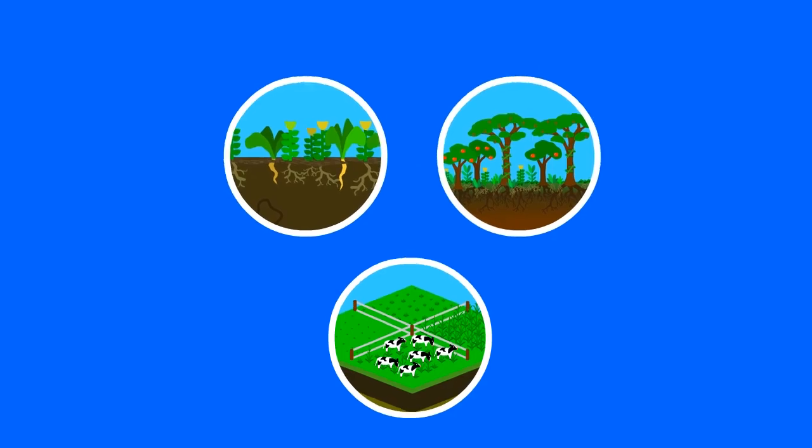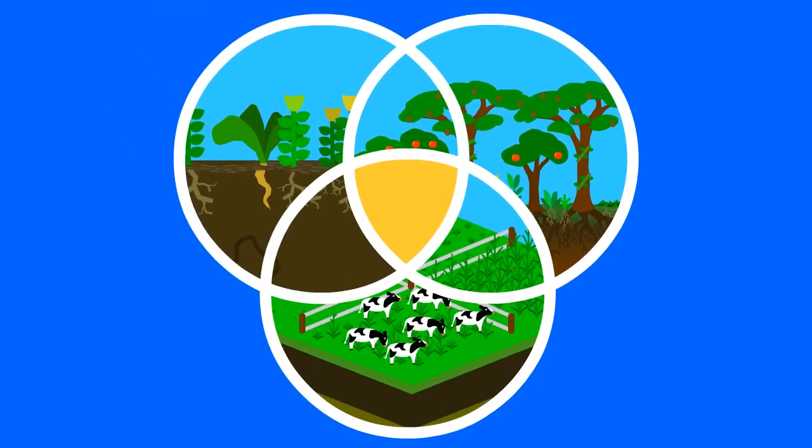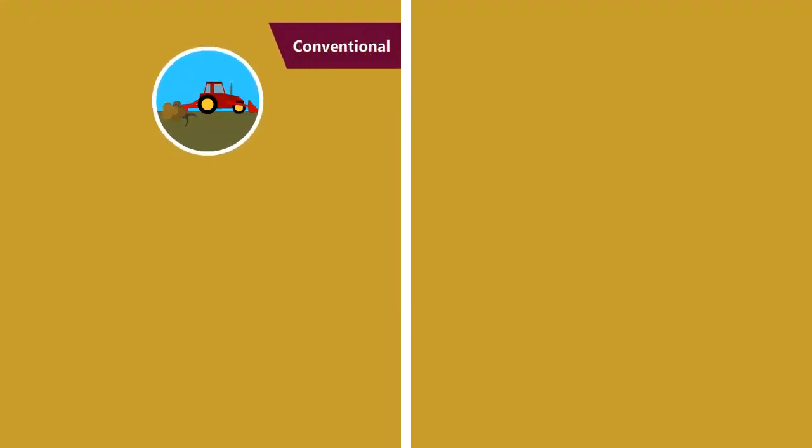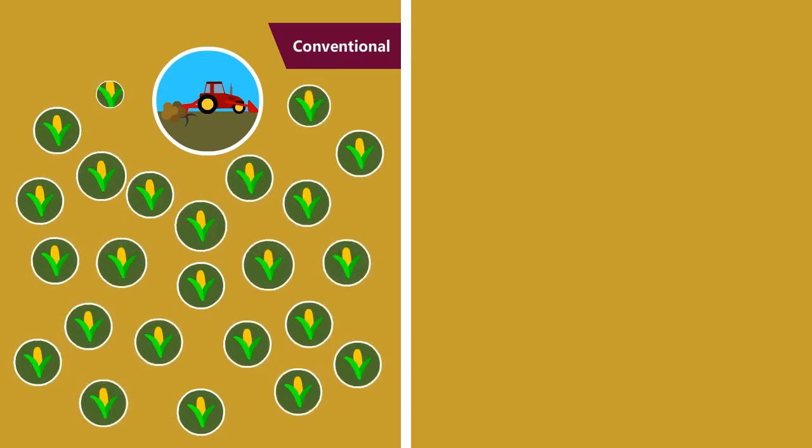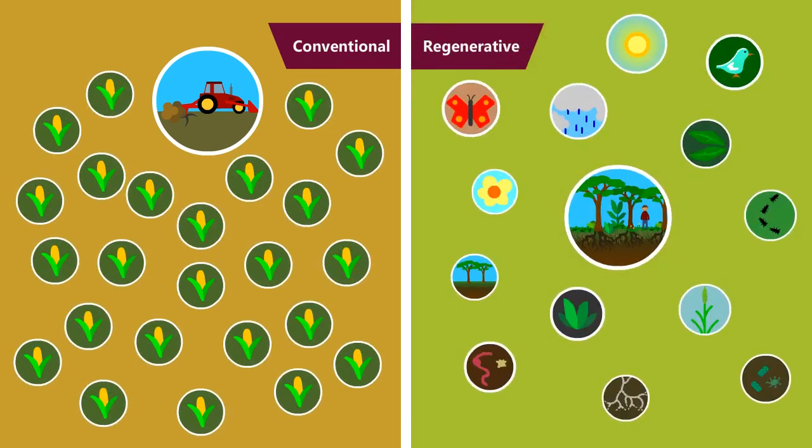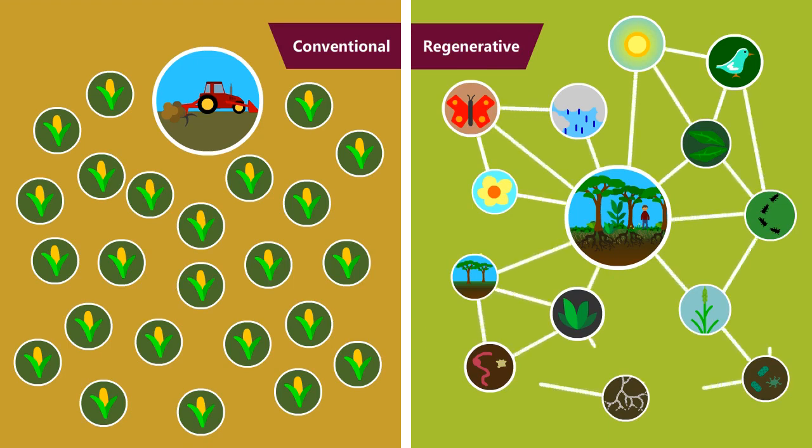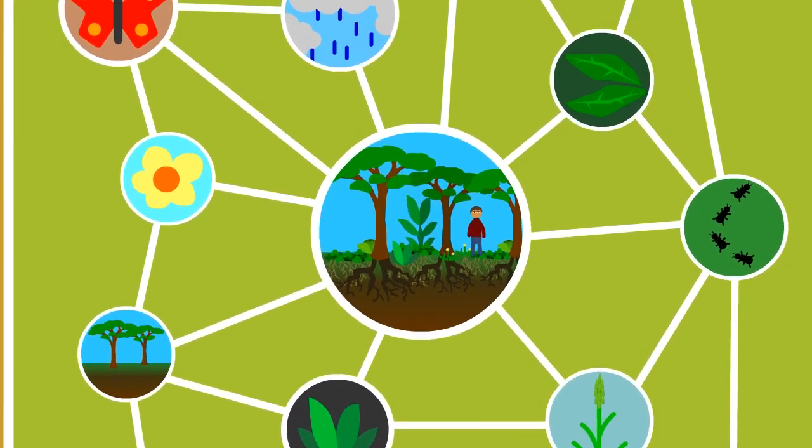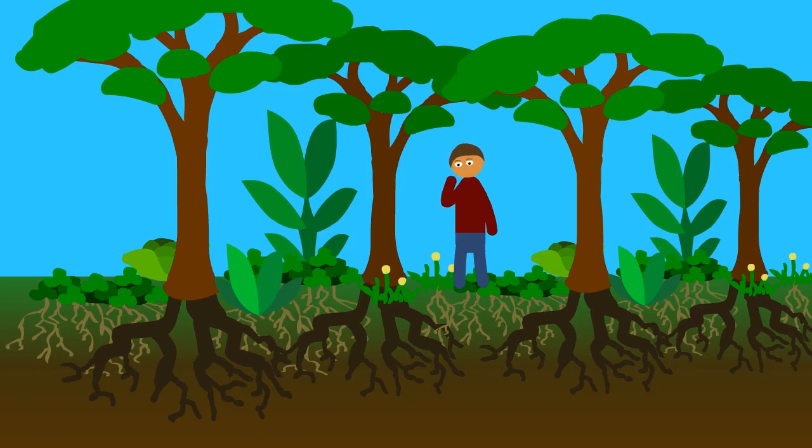These three examples of regenerative agriculture plus all the rest of them all have something in common. Whereas in conventional agriculture you seek to create as many of one thing as possible, in regenerative agriculture you seek to create as many relationships between things as possible. You are one of those things. What sort of relationship with the land do you want to foster?